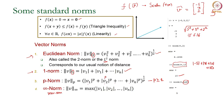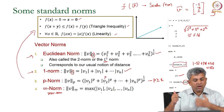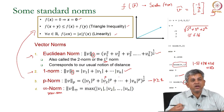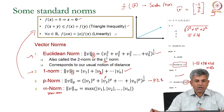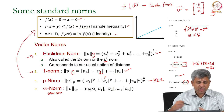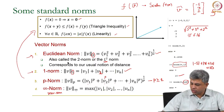The most natural norm we think of is the 2-norm, but the 1-norm and infinity norm are also useful. All of these norms satisfy the three properties. We know the Euclidean norm satisfies them by intuition. For the infinity norm, the only way the maximum absolute value can be 0 is if all components are 0. Similarly, for the 1-norm, the only way the sum of absolute values equals 0 is if each individual component is 0. So all three properties are satisfied by all three norms.